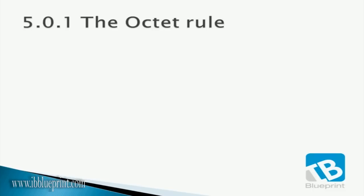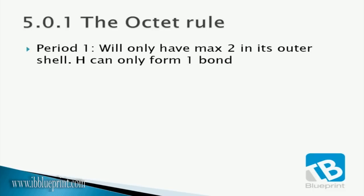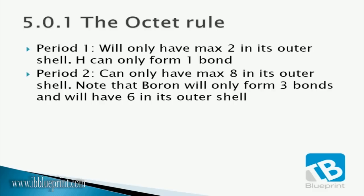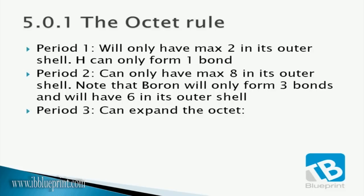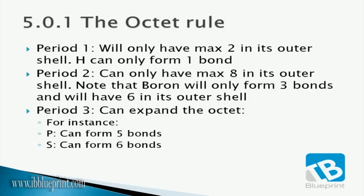Before moving on, let's look at the octet rule and some exceptions. For period one, there is a maximum of two electrons in the outer shell, and hydrogen can only form one bond. For period two, the maximum is eight electrons in the outer shell, noting that boron will only form three bonds and have six in its outer shell. For period three, we can disobey the octet rule — for instance, phosphorus can form five bonds and sulfur can form six bonds.